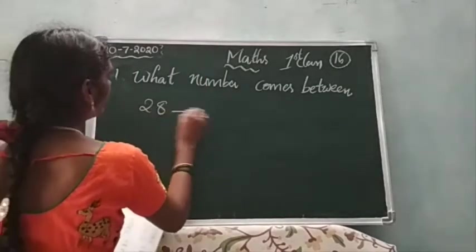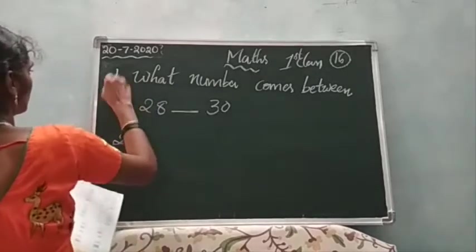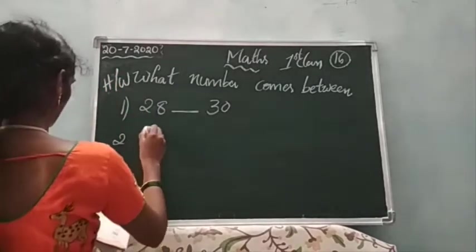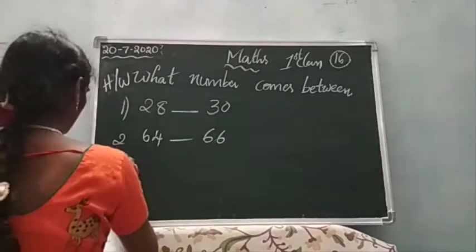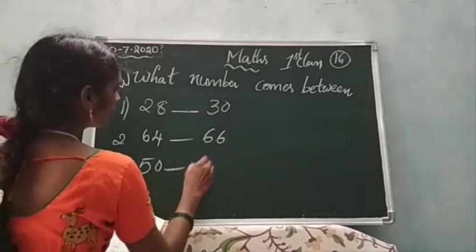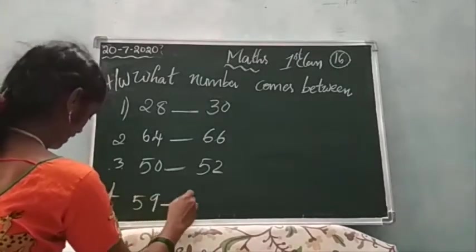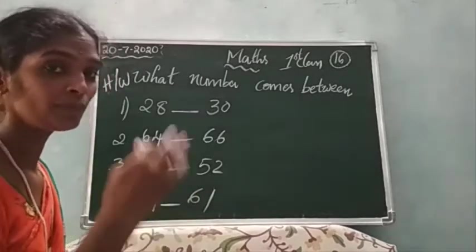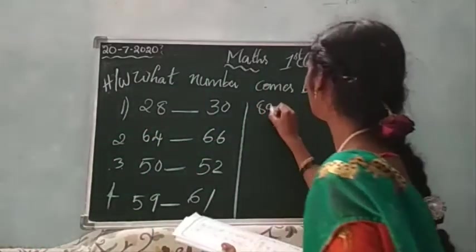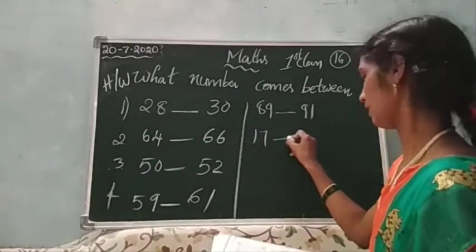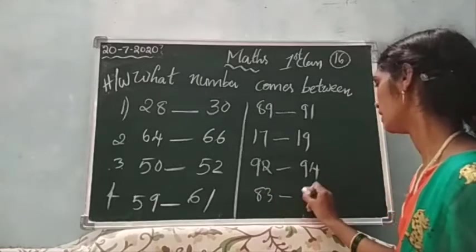Ok children: 28 after the number? 30 before the number? And 50 after the number? 52 before the number? You will write here. Ok children: 89 dash 91. 17 dash 19. 92 dash 94. 83 dash 85.